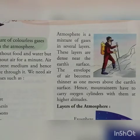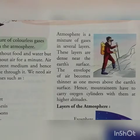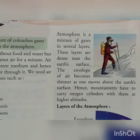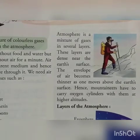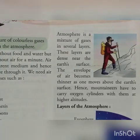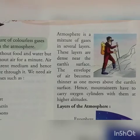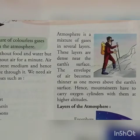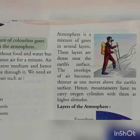The blanket of air that surrounds the earth is called the atmosphere. It is a mixture of gases in several layers, which are dense near the earth's surface. As you move above the earth's surface, it becomes thinner and thinner. That is why mountaineers carry oxygen cylinders with them — because at higher altitudes there is less oxygen, which can cause problems in breathing.